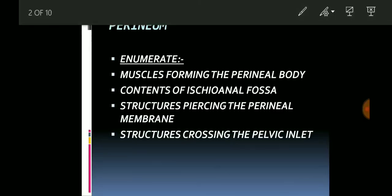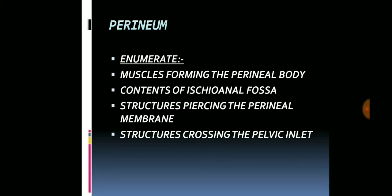Moving on to the first chapter, that is the perineum. The enumerate questions asked from this chapter are: muscles forming the perineal body, contents of the ischioanal fossa — this is a very important question — structures piercing the perineal membrane, which is also important, and structures crossing the pelvic inlet, which is a lesser important question.